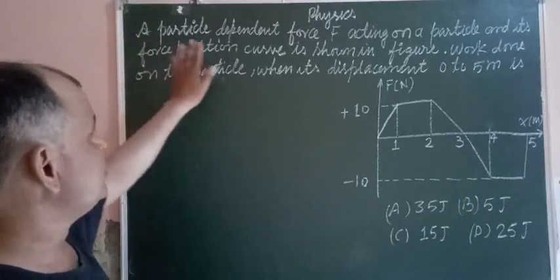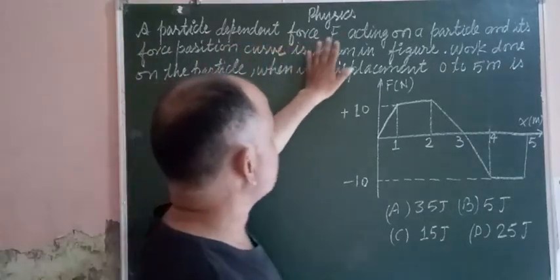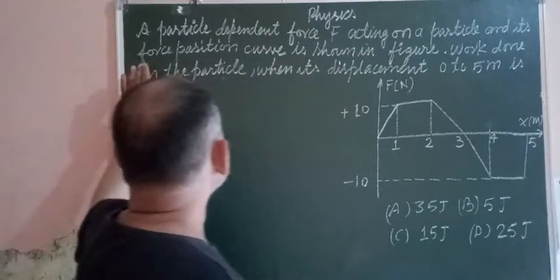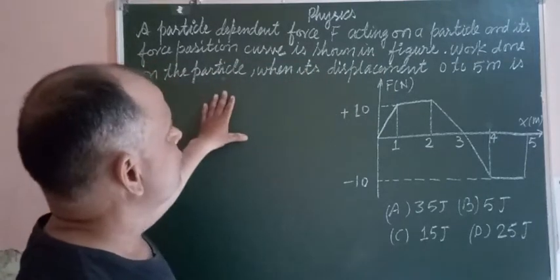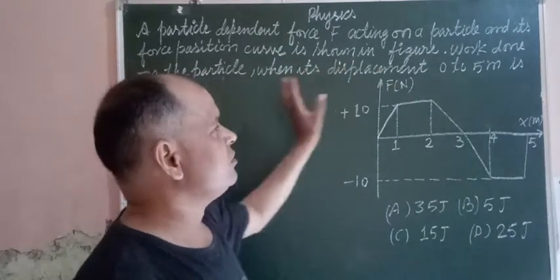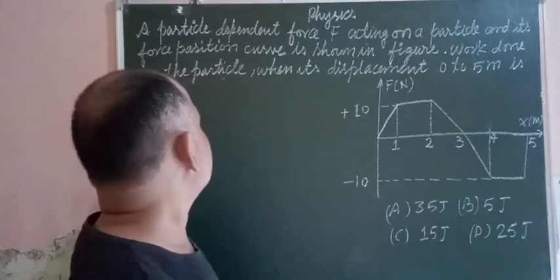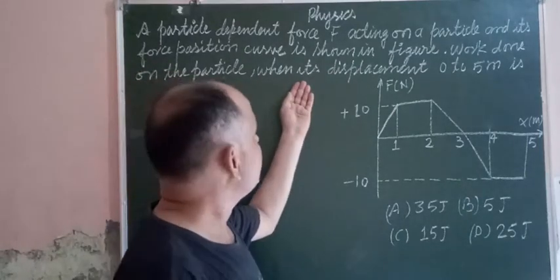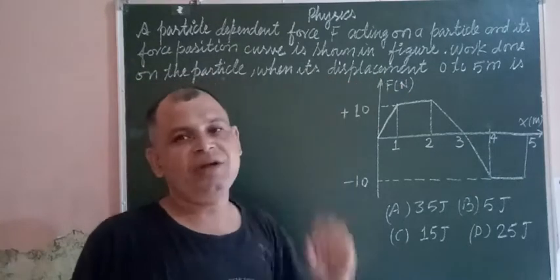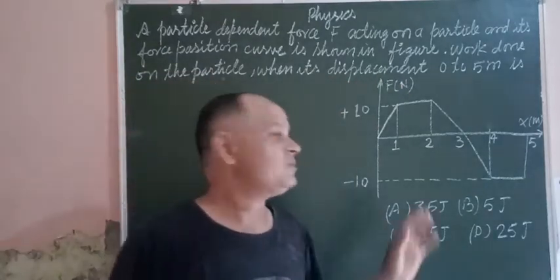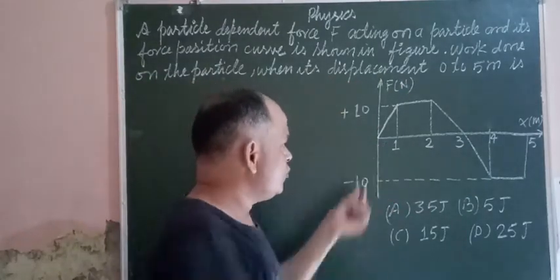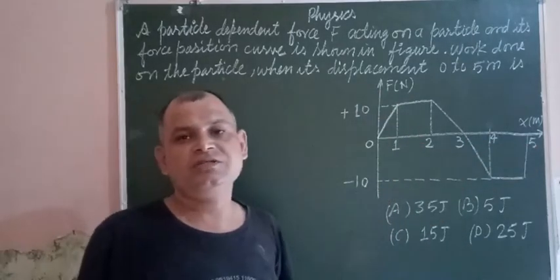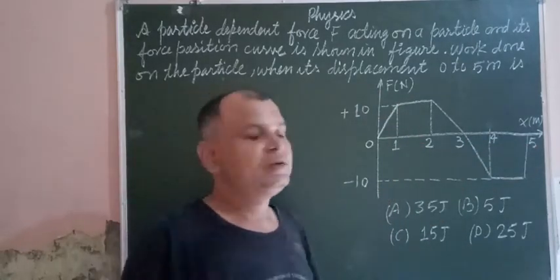The question says a position-dependent force acts on a particle and its force-position curve is shown in the figure. Find the work done on the particle when its displacement is from 0 to 5 meters. So the displacement is from 0 to 5 meters and we want to find the work done by the force.